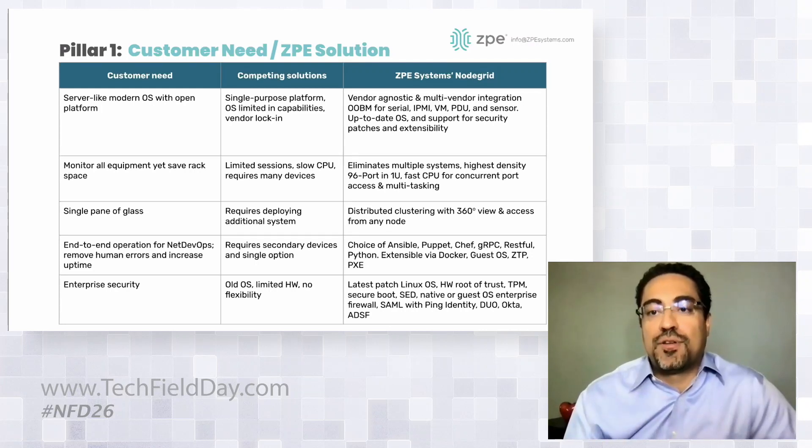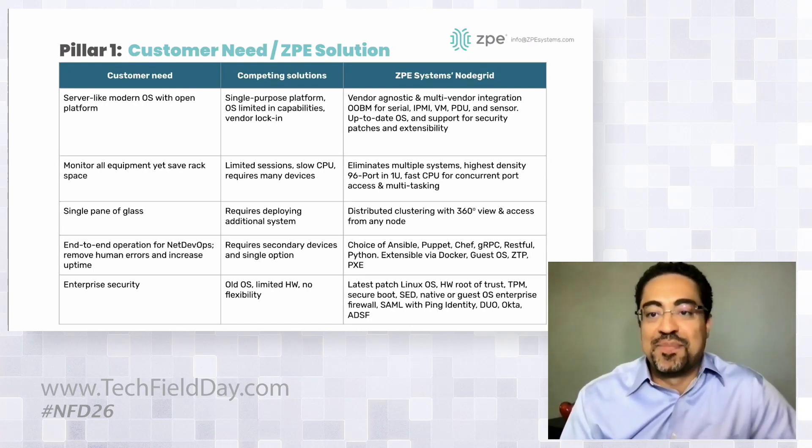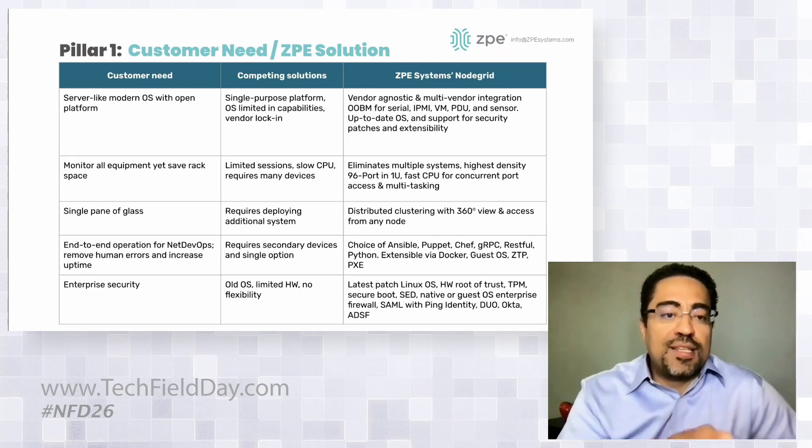Follow-up question: orchestration systems today are typically cloud-delivered — do you need hardware in every data center, or is there a cloud-hosted solution? Answer: yes, there is a cloud-hosted solution — in fact that's what the demo will show. Pillar one is the data center use case where people want everything on-premises. Pillars two and three cover distributed and global infrastructure, and that's where the cloud comes into the picture.